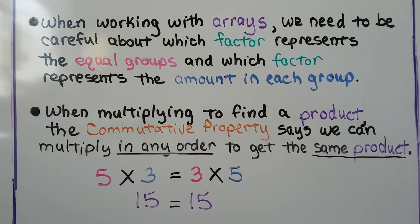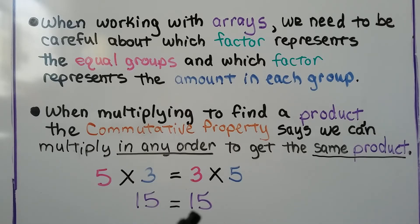When working with arrays, we need to be careful about which factor represents the equal groups and which factor represents the amount in each group. The amount in each group is what we would skip count by. But when multiplying just to find a product, the commutative property says that we can multiply in any order to get the same product. So 5 times 3 is equal to 15, and 3 times 5 is equal to 15. Either order, we're going to get the same product.